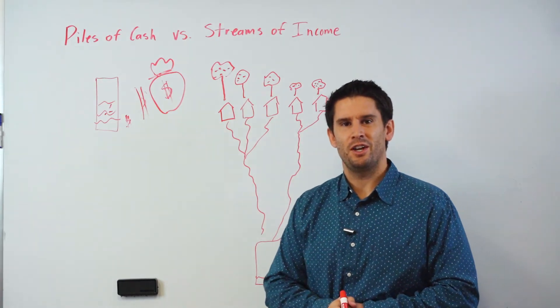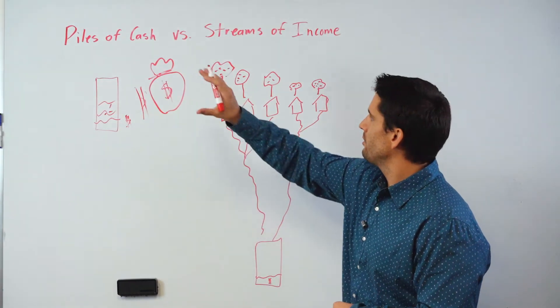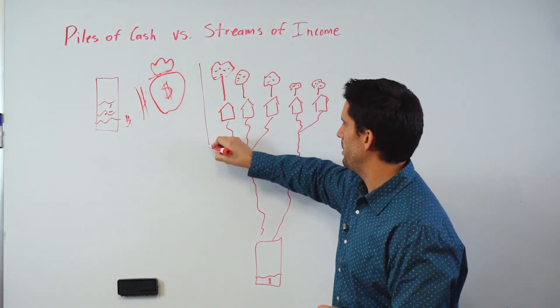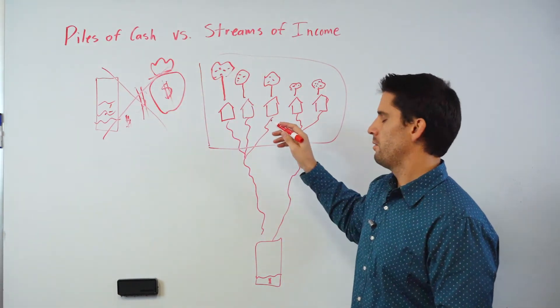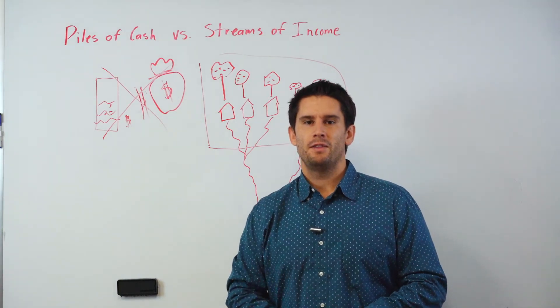Anyways, just my analogy on that I like to share with you. Piles of cash versus streams of income - instead of focusing on a big pile of cash to save up, focus on those streams of income.